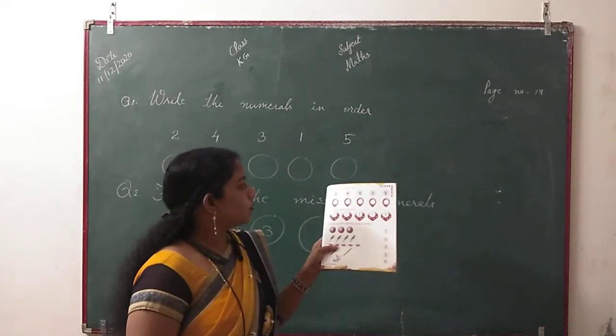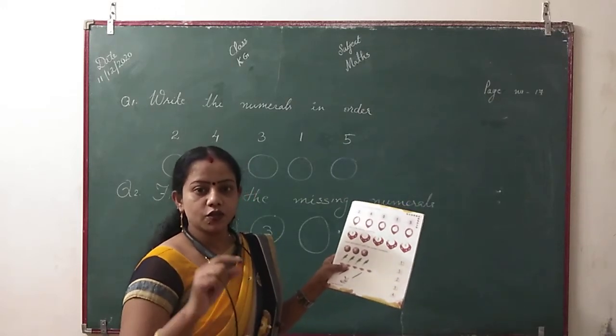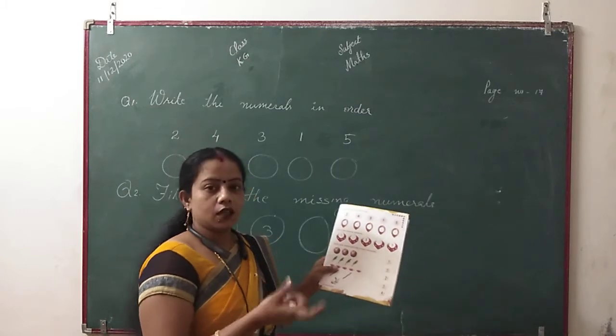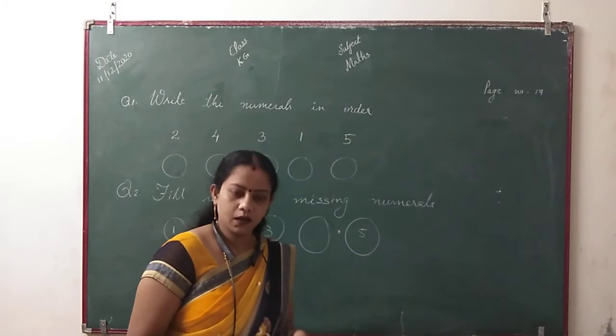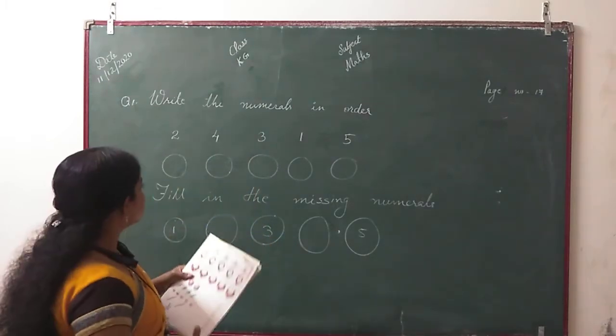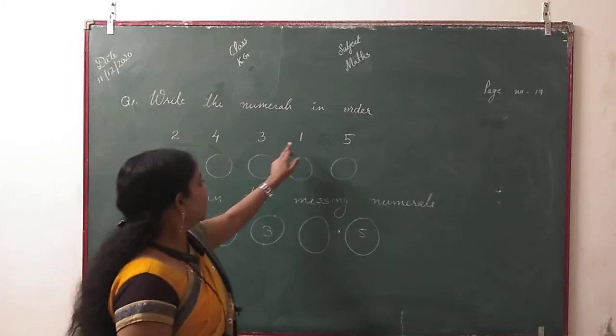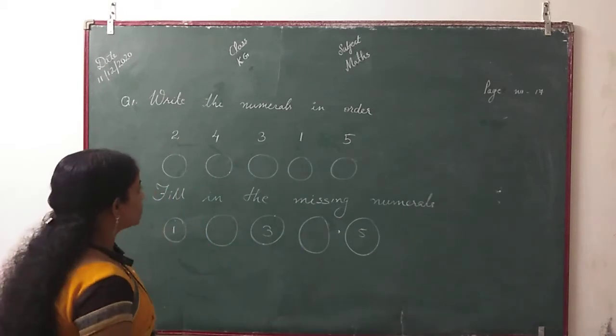You are given some numbers which are not orderly. You are given a sequence: 2, 4, 2, 1, 5. You can arrange them in proper manner. First digit is 2, second digit is 4, then we arrange them. We will arrange properly.